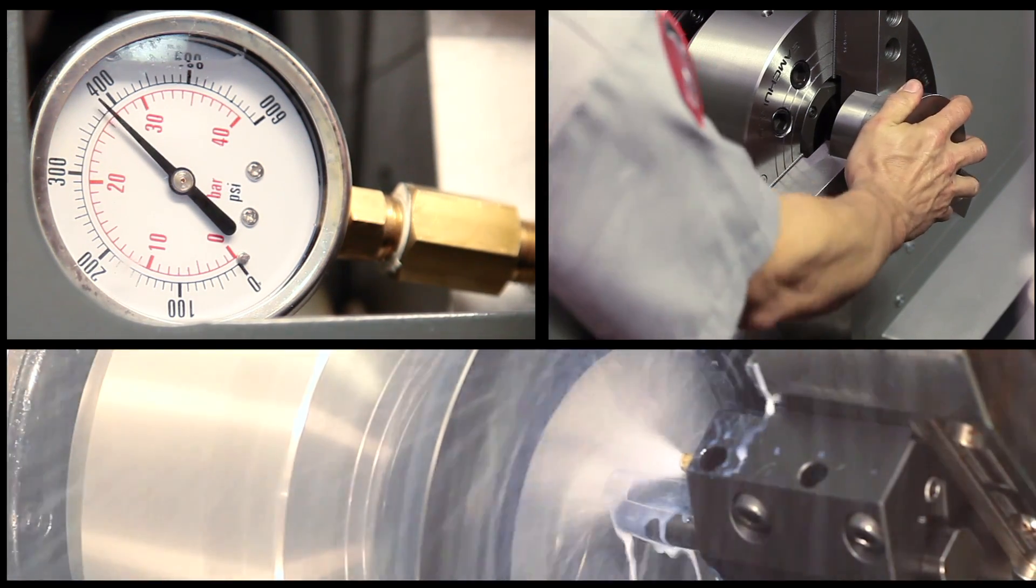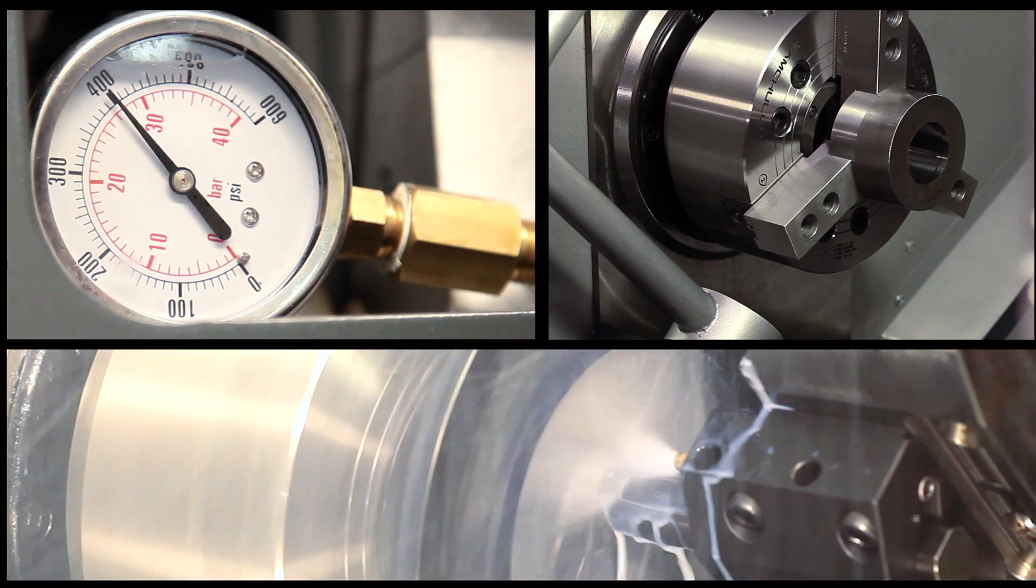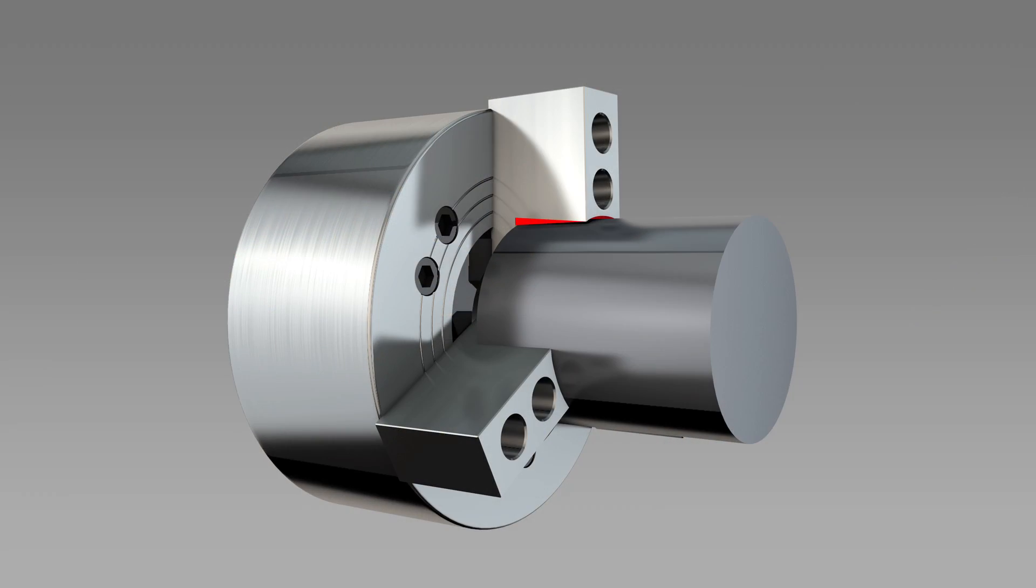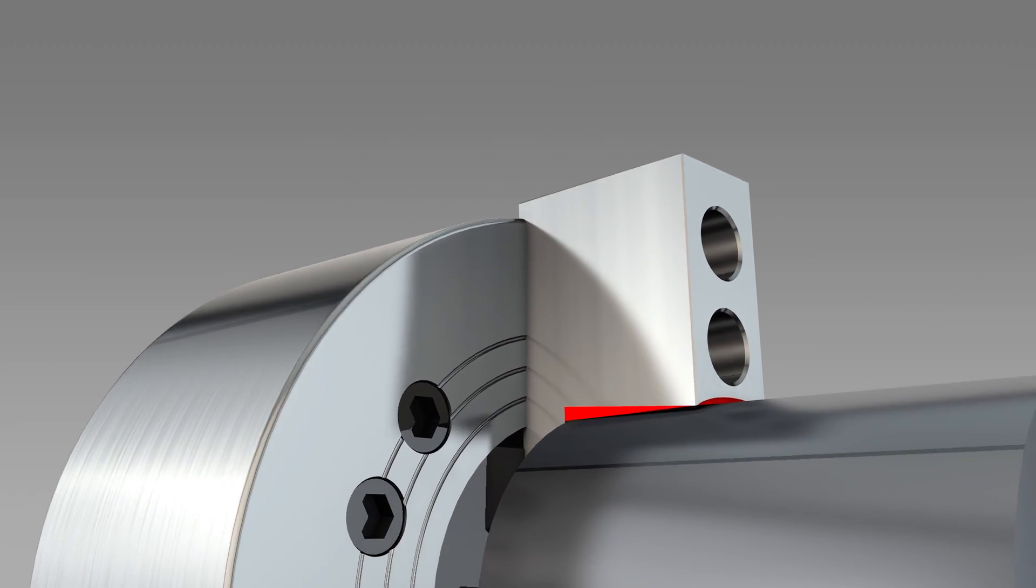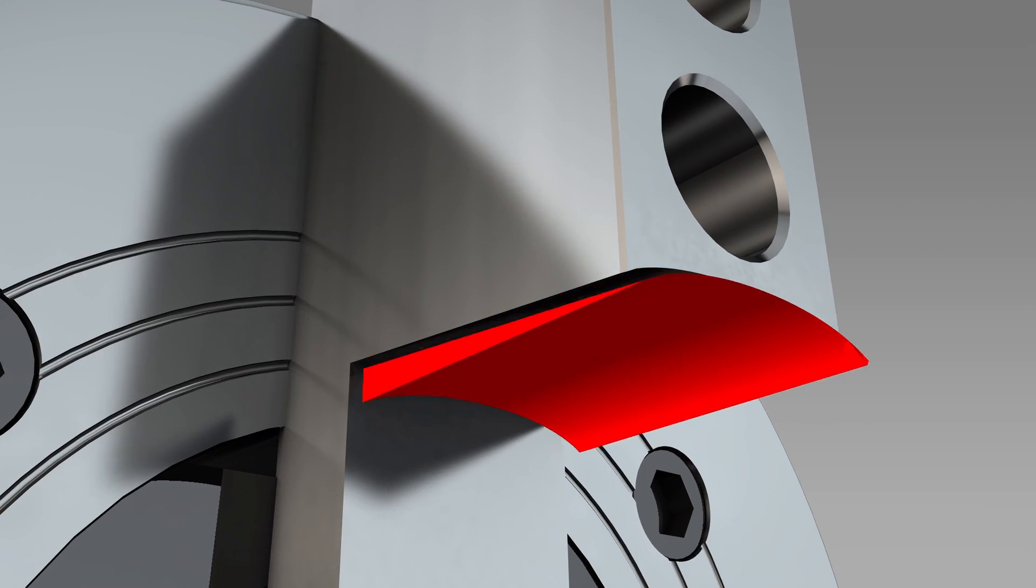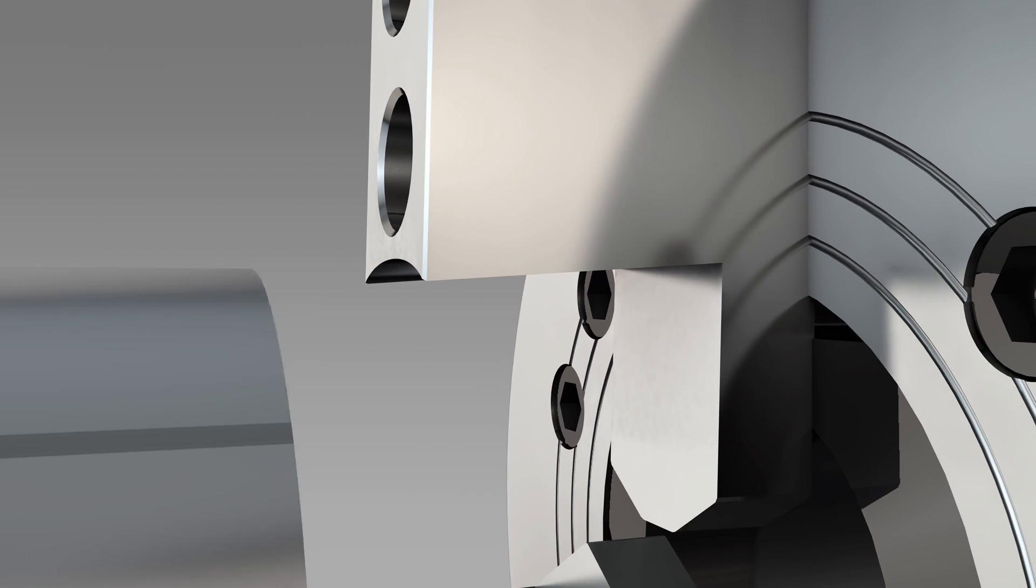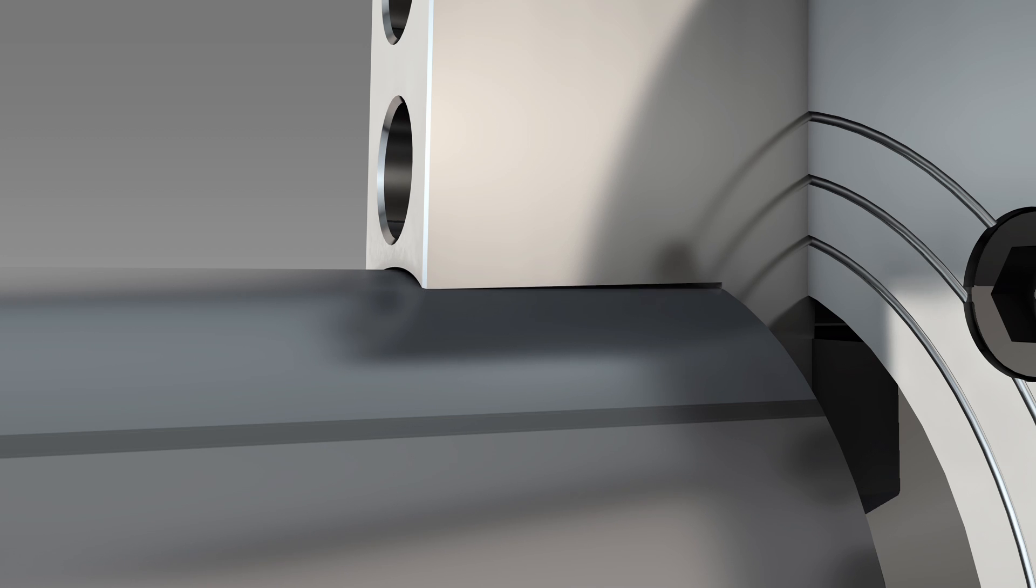This occurs particularly at extreme differences in clamping pressure and at very long jaw lengths. To compensate for this deflection, cutting a slight taper in the jaws may become necessary. After the taper is cut and the correct force is applied to the workpiece, the jaw faces will still be parallel to the workpiece despite jaw deflection.